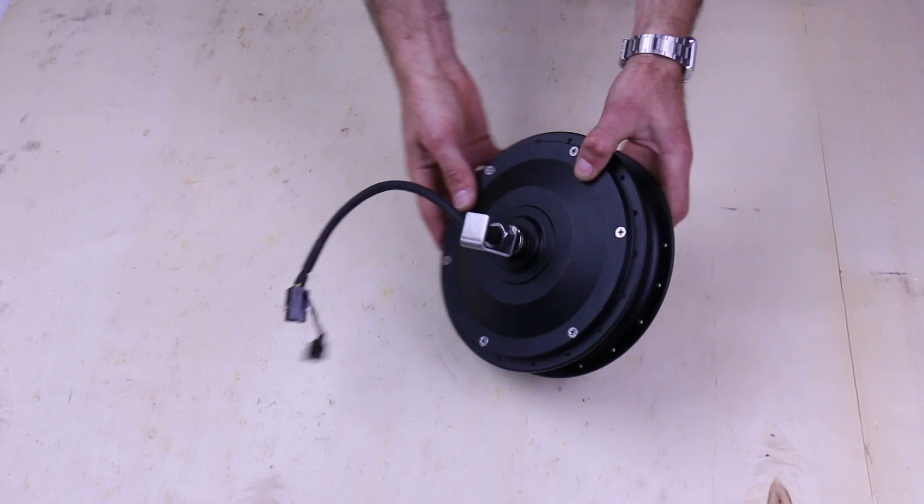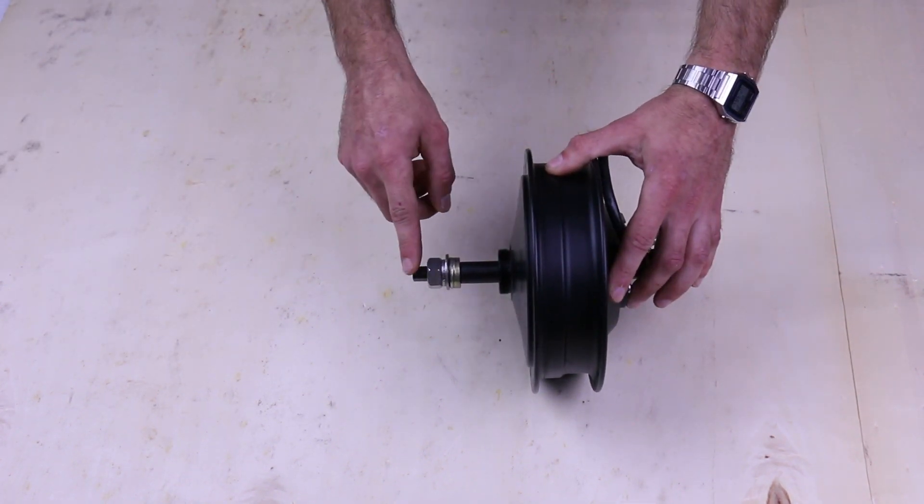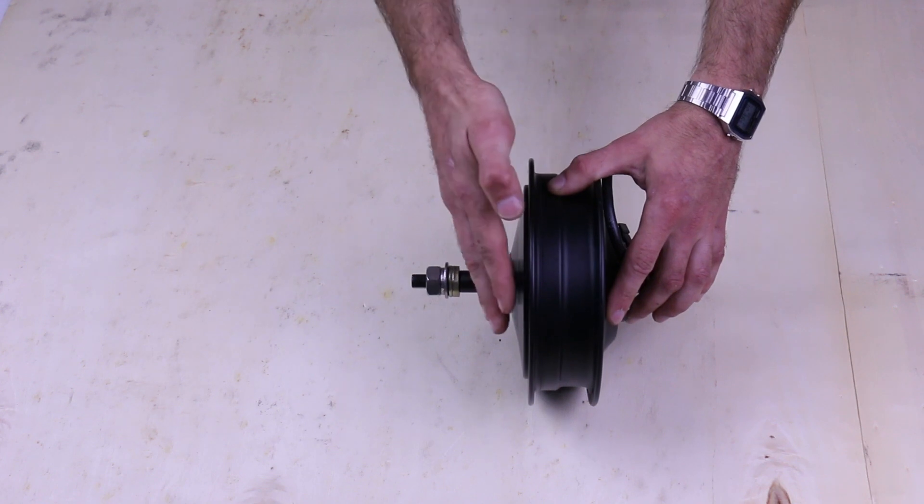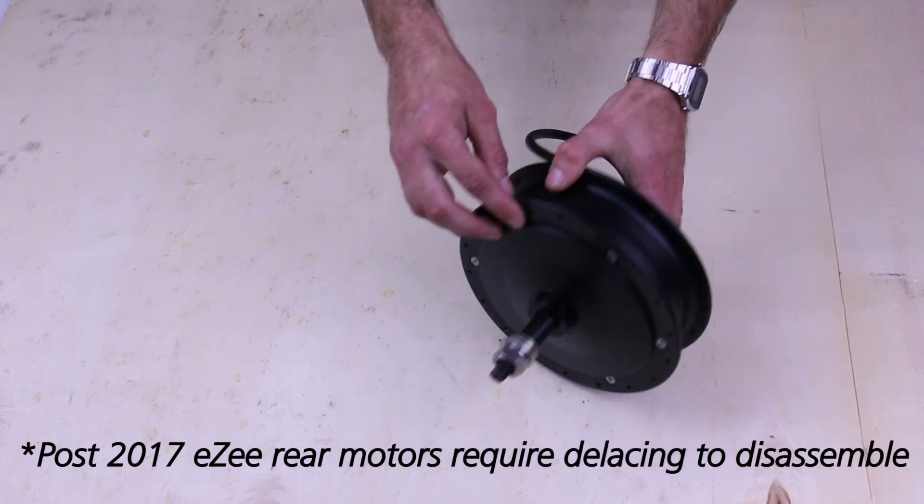And that is important to note because on the rear motors since about 2017, when they updated the casting for the cassette version of this motor, they changed it so that the spoke flange on the drive side is actually a part of the side plate.